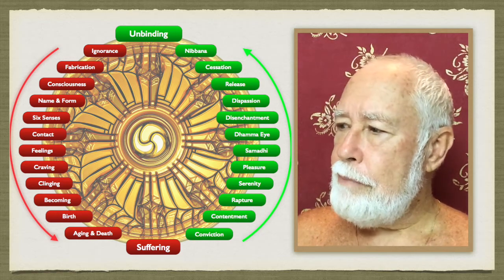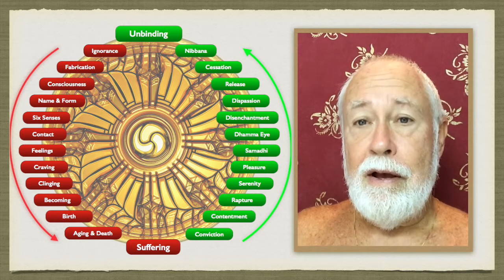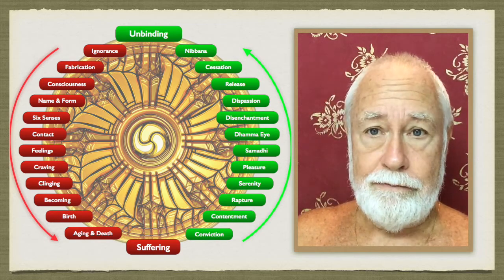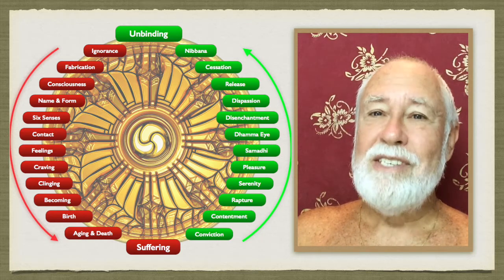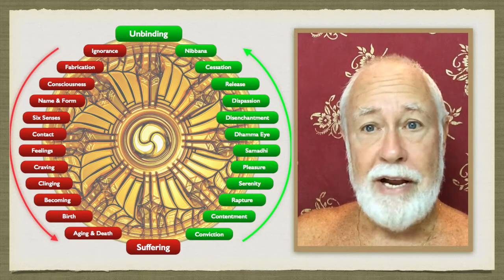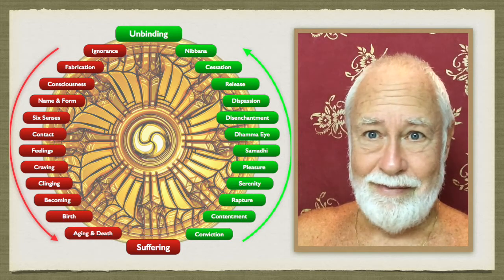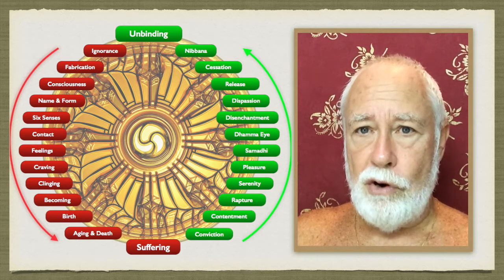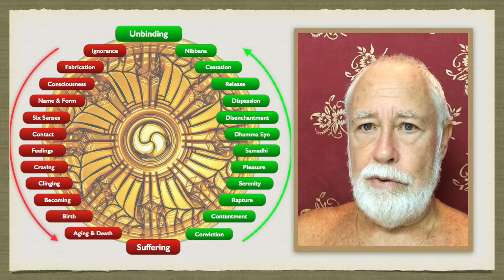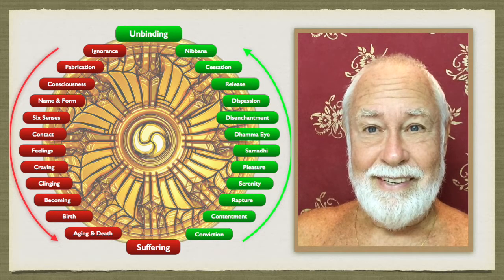So you see, this process, Paticca Samuppada - Paticca Samuppada means specific causality. As a result of this, that arises. As a result of that, this other thing arises, and so on down the line. So because of ignorance, ignorance is the ultimate cause. This is good, this is bad, and I don't care about the rest. That fundamental distinction is the root cause of everything. And when we penetrate in meditation to that root cause is when we attain final enlightenment, fourth path, Arahanthood. When we go beyond that, when we see that everything is... that's the moment.